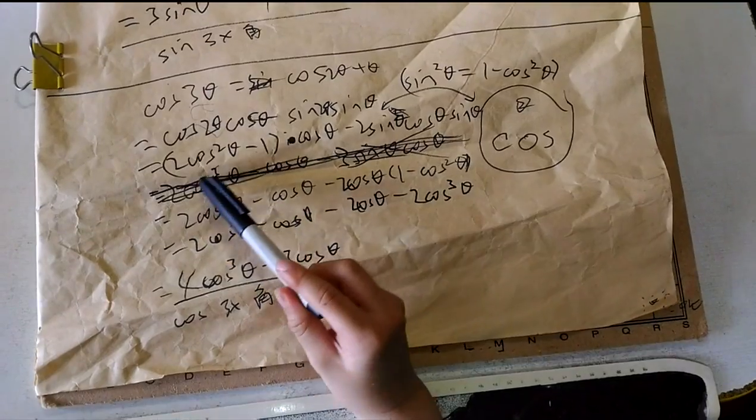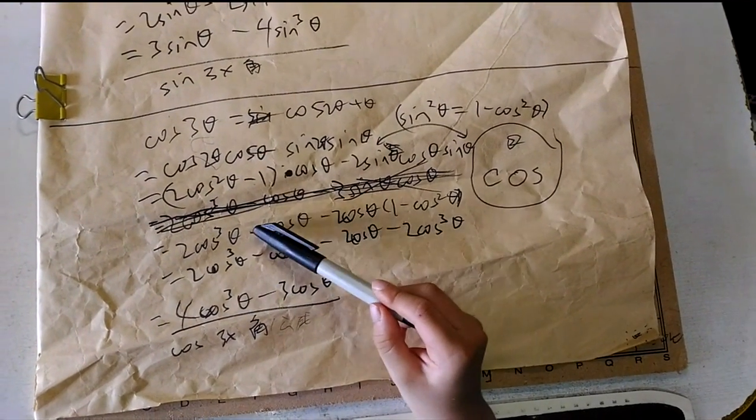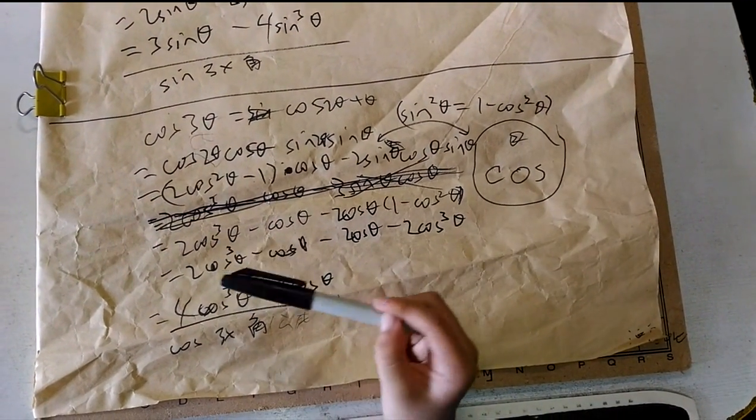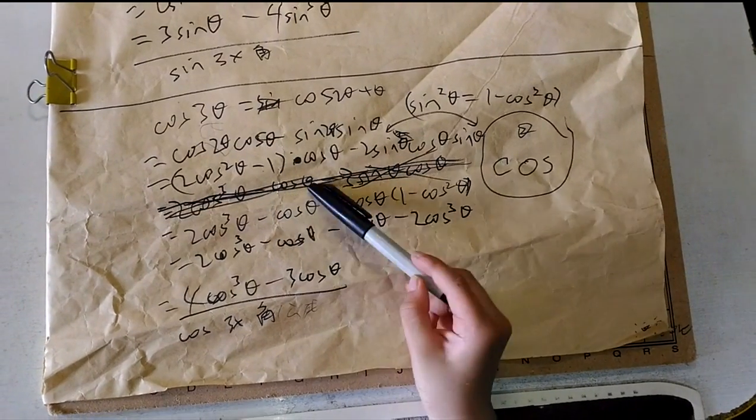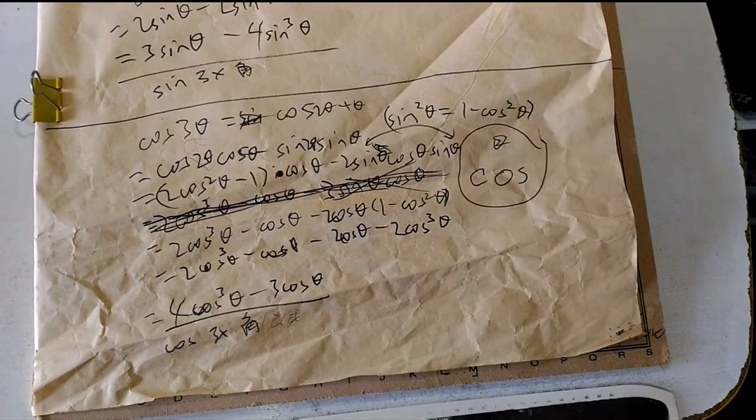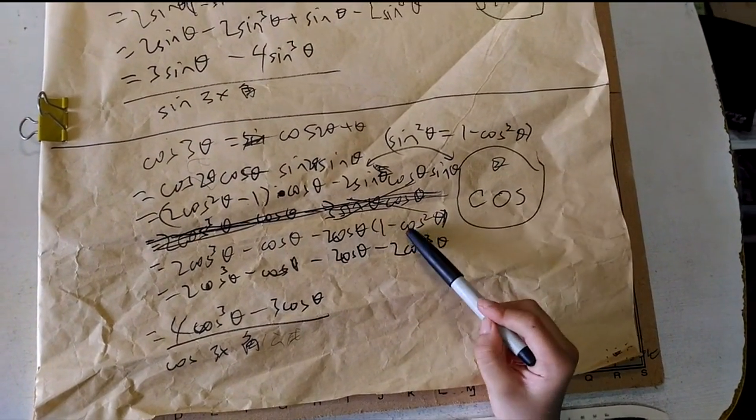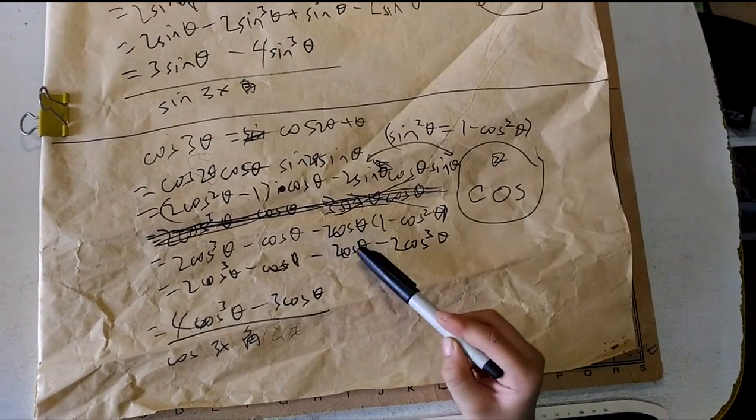First of all, 2 cosine squared times cosine is 2 cosine cubed. 1 times cosine is cosine. So now we need to distribute these terms as well.